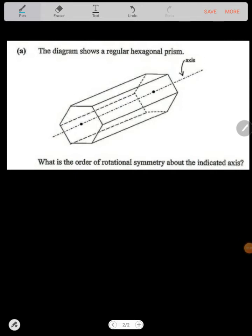Then we have this one that says the diagram shows a regular hexagon. First we need to know what a hexagon is - a hexagon is a polygon of six sides, so it has n equal to 6. They're saying what is the order of rotational symmetry about the indicated axis?